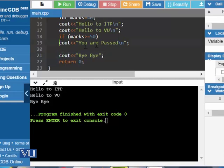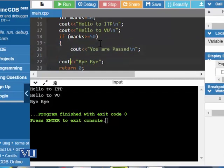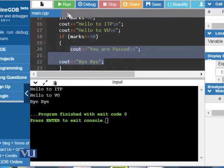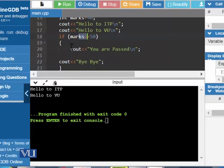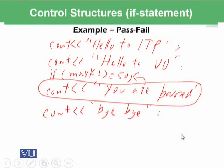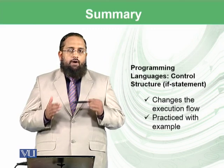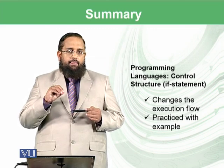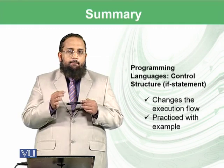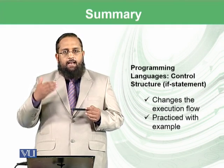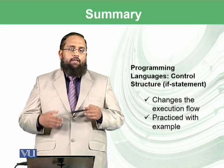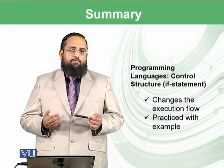If you want to couple the bye-bye statement with the if statement as well, you can write curly brackets. Now if the condition is false, both statements will not be shown. We execute and confirm: since the condition was false, both statements were not shown, as they are now coupled with the if statement using curly brackets. So we have learned about the pass-fail example using the if statement control structure. The flow of the program can be controlled using the if statement — if the condition is true, the coupled statement executes; if false, the statement or set of statements will not be executed.